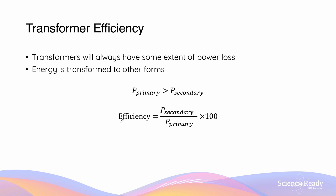The efficiency of a transformer refers to the percentage of electrical energy that is transferred from the primary coil to the secondary coil. This is calculated by dividing the power of the secondary coil by the power of the primary coil, then multiplied by 100 to obtain a percentage.